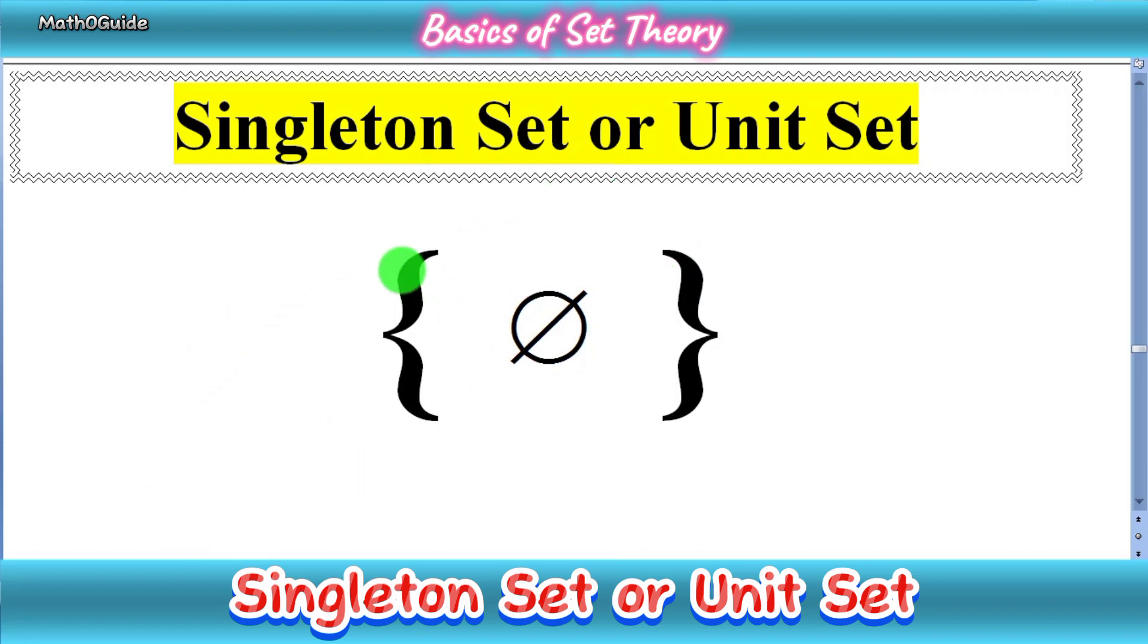These outer brackets denote a set, and the inner symbol denotes the empty set. It means a set within a set that has only one element, which is the empty set. So overall, this is not an empty set but a singleton set.